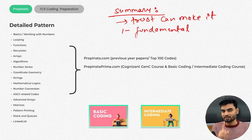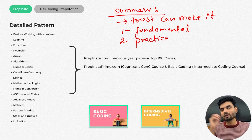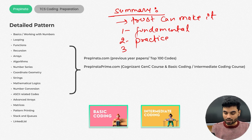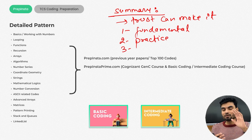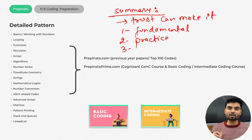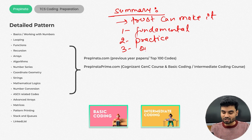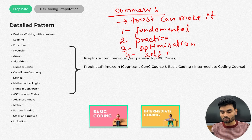Again, summarizing: clear fundamentals first — most importantly, how you take input. Second, practice using top 50 questions, previous year question papers, and 150 not-out. Third, once you practice, think about optimization — sliding window, two-pointer, bit manipulation, and so on. Then after optimization, do self-mocks and simulate the real coding scenario.